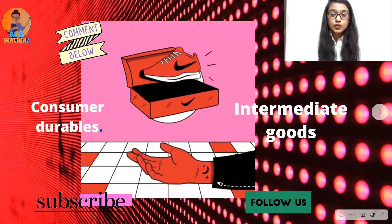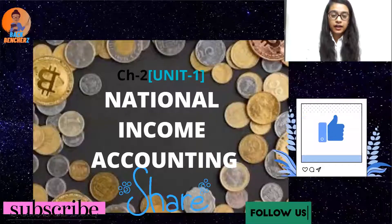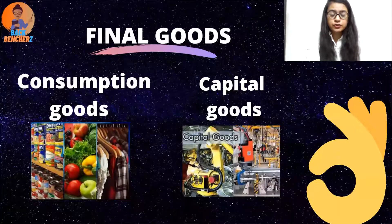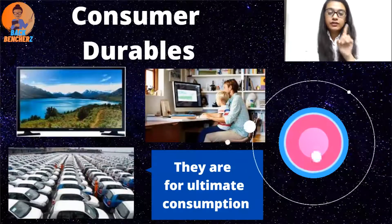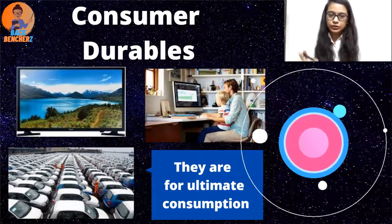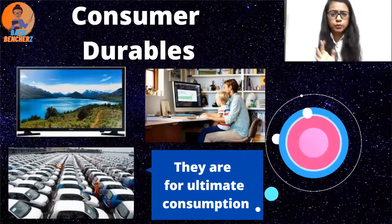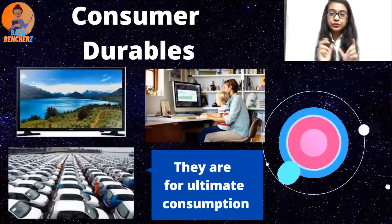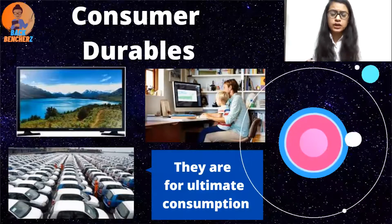Hello everyone, welcome back. Today we are going to deal with consumer durables and intermediate goods. We are in the second chapter, that is national income accounting. We have done final goods, consumption goods, and capital goods. Now today we are going to deal with consumer durables. As the name suggests, their duration is good. Examples are television, computer, automobiles — which we consume ourselves, but they are durables.